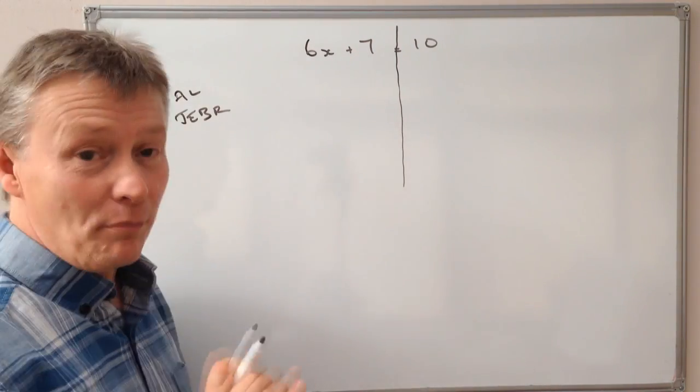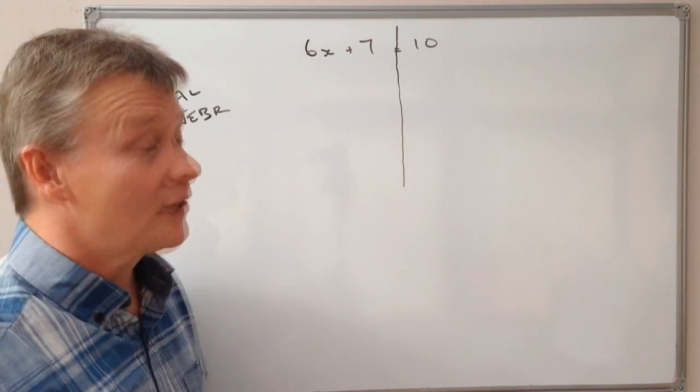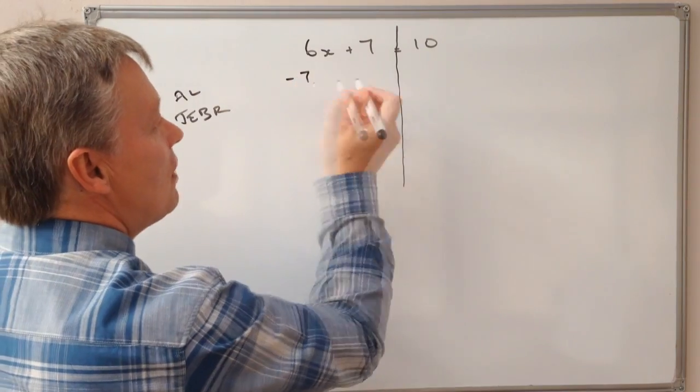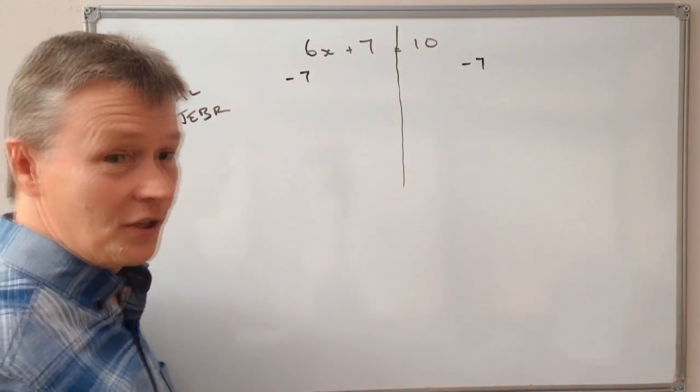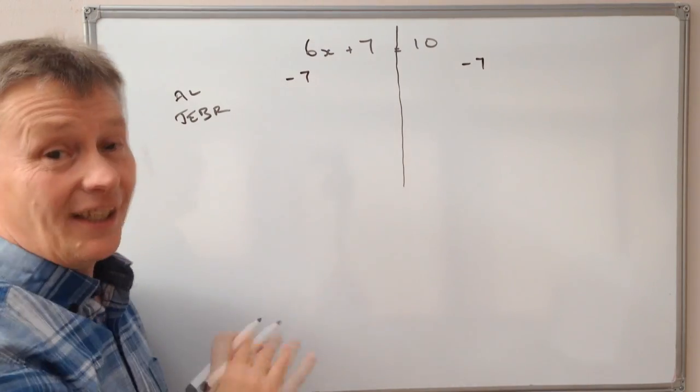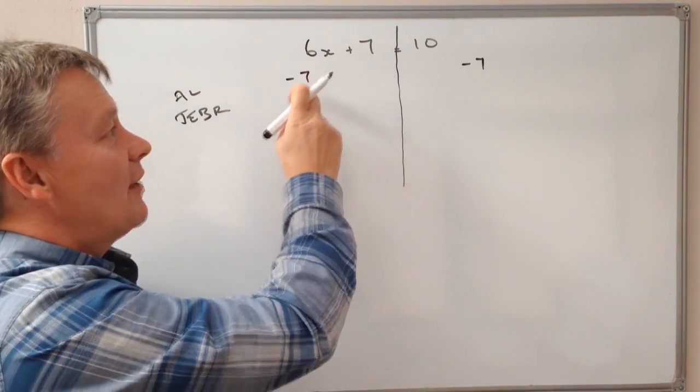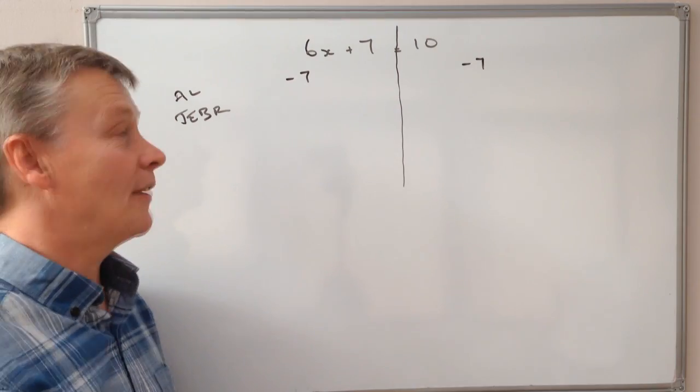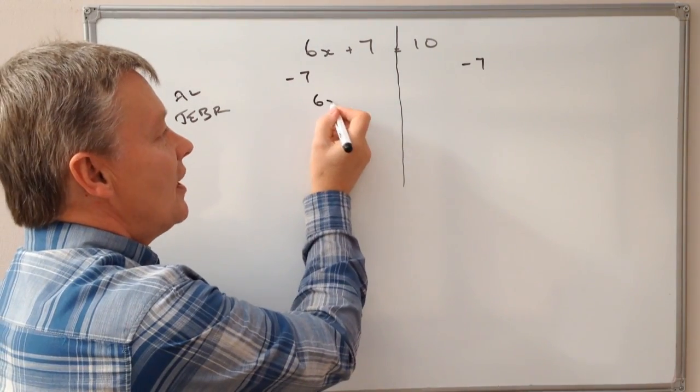So I need to get rid of that positive 7. The way I'm going to do that is I'm going to minus 7 from both sides, which means that on this side it cancels itself out. So I've got positive 7 minus 7, got nothing left. So I'm just going to be left with 6x.